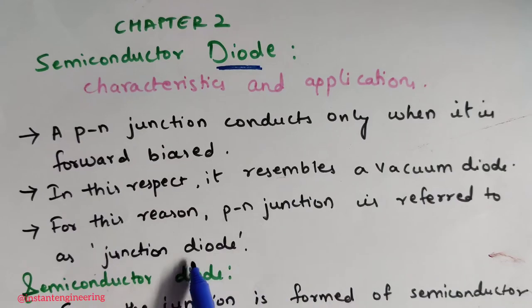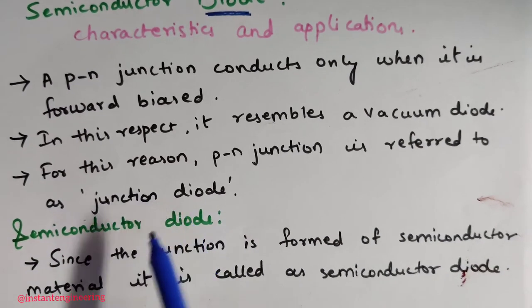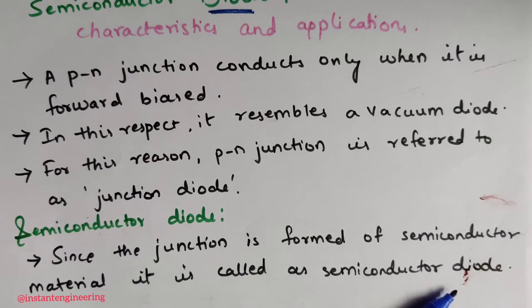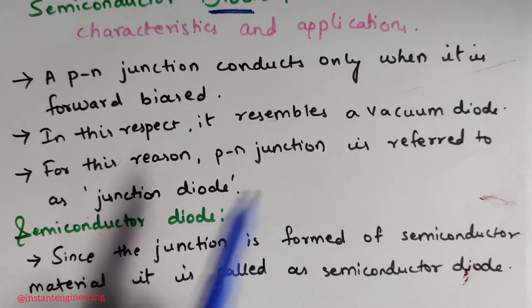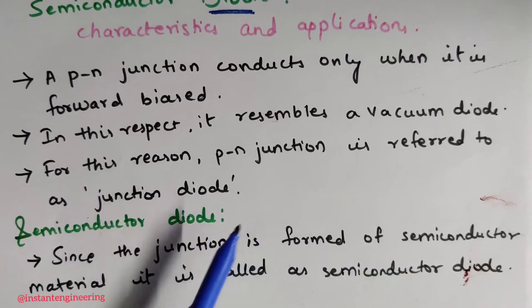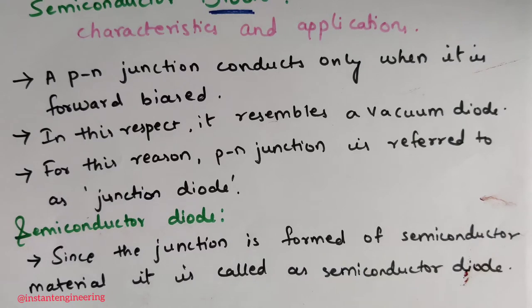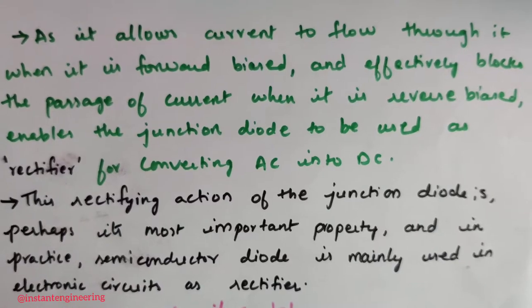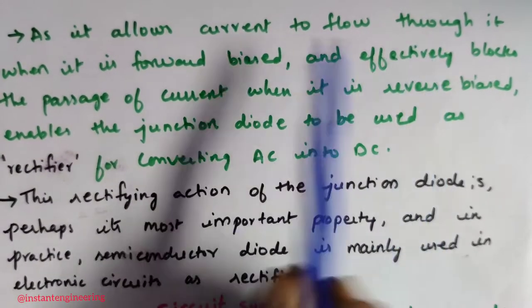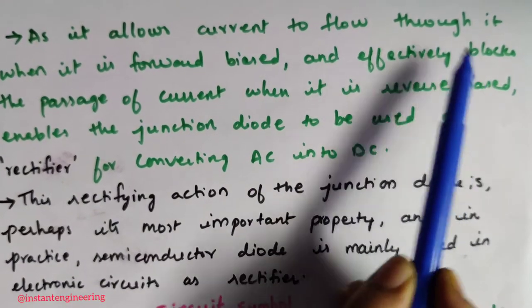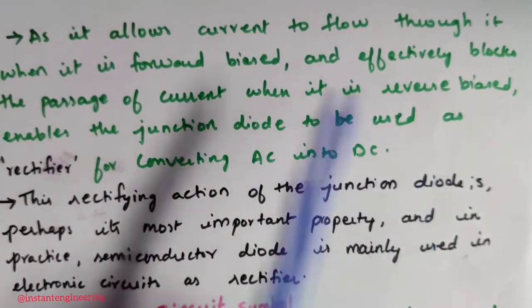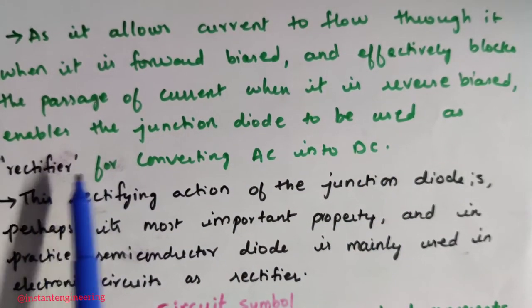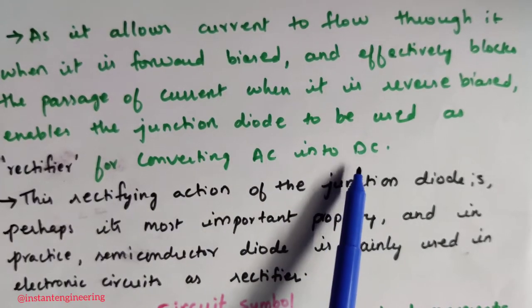This PN junction is also called a junction diode. Since the junction is formed of semiconducting material, it is called a semiconductor diode. The semiconductor diode will allow current to flow through it when it is forward biased, and it will effectively block the passage of current when it is reverse biased. This enables a junction diode to be used as a rectifier — a rectifier converts AC to DC.